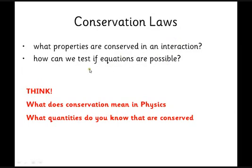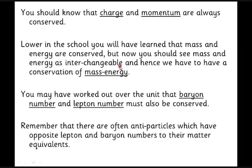We can look at equations and say that might happen, or no, there's no way that could ever happen. Things we already know that are conserved: charge is always conserved and momentum is always conserved. You will have learned that mass and energy are also conserved, but because of E = mc², that's not quite right at our level. We do still have conservation of mass-energy — there is only a certain amount of energy you can produce by destroying mass, and vice versa.